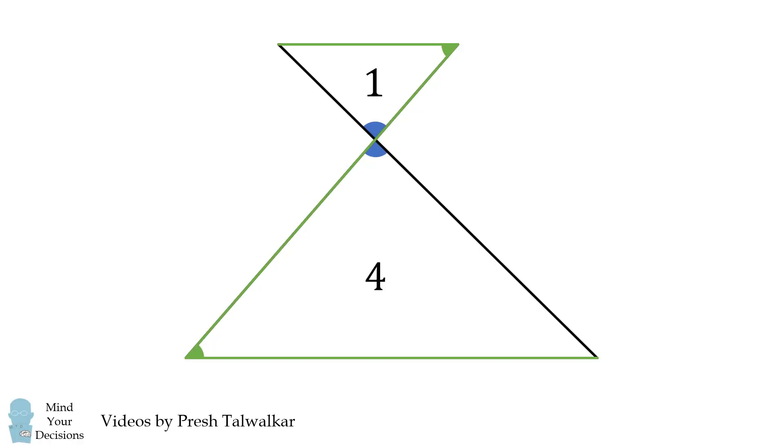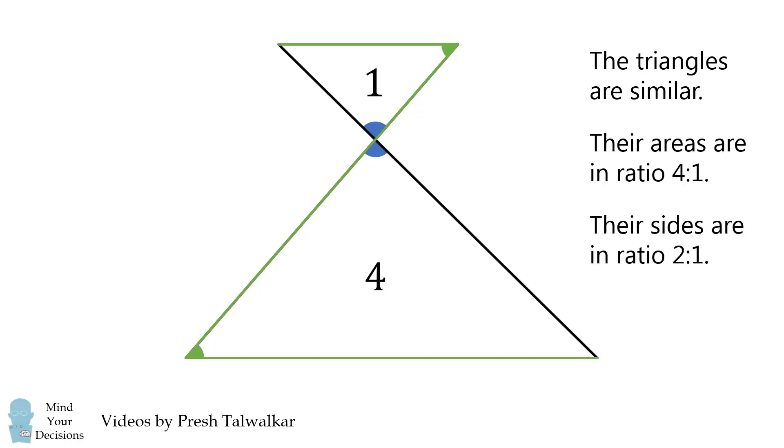Consequently, these two triangles have two equal angles, which means all three angles are equal and these triangles are similar. As their areas are in a ratio of 4 to 1, their sides will be in a ratio of 2 to 1. That's because the area is proportional to side length squared.